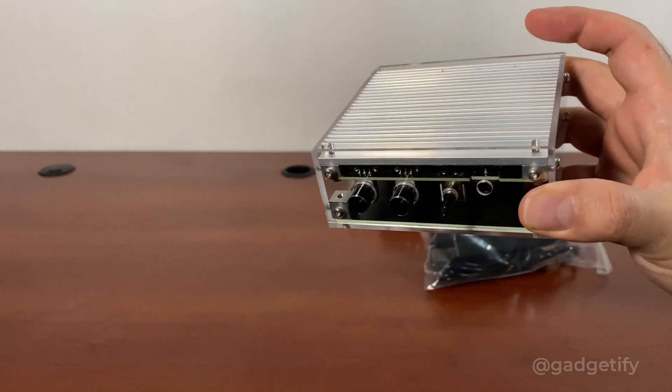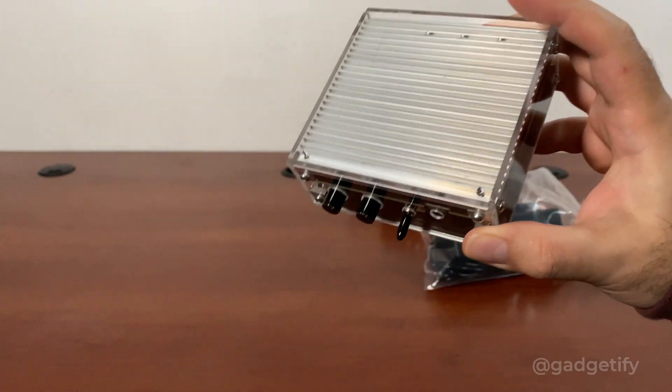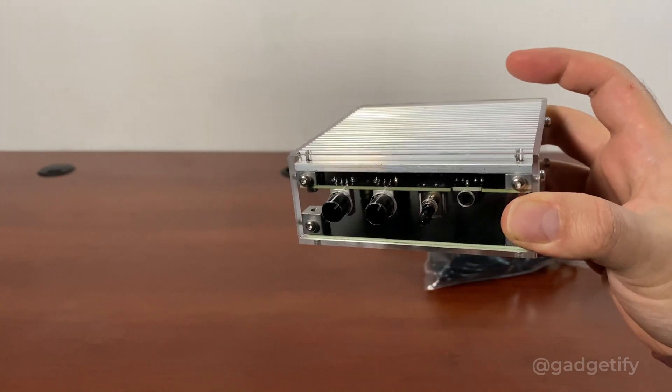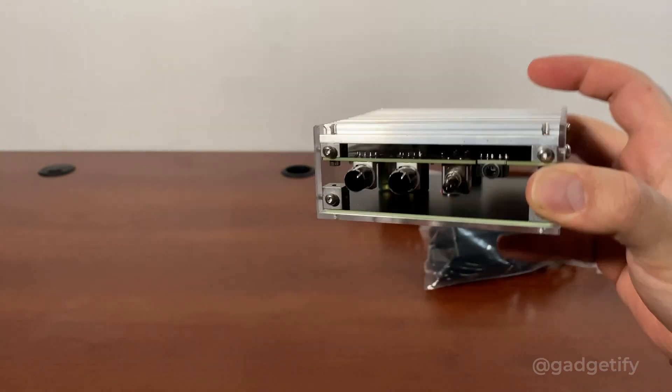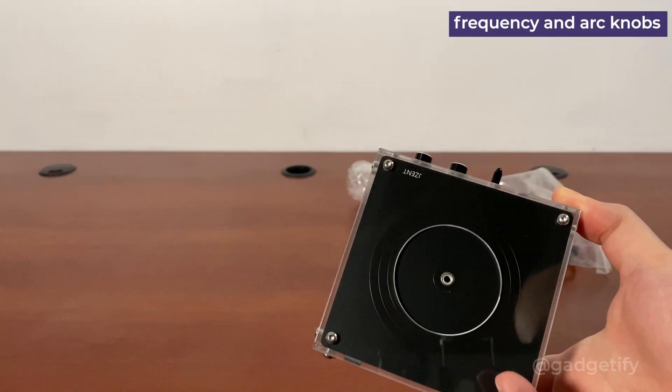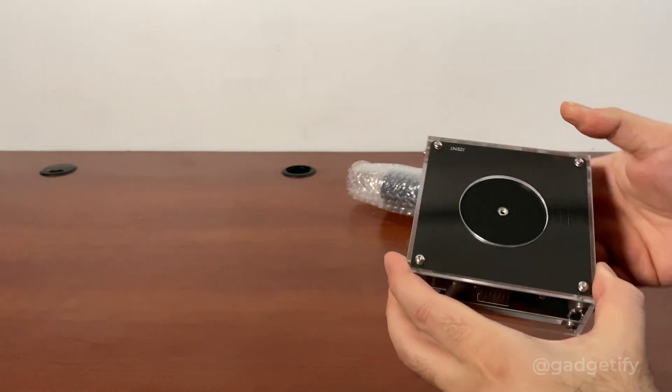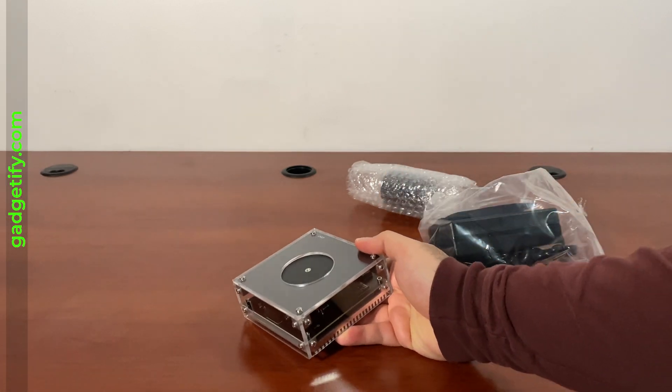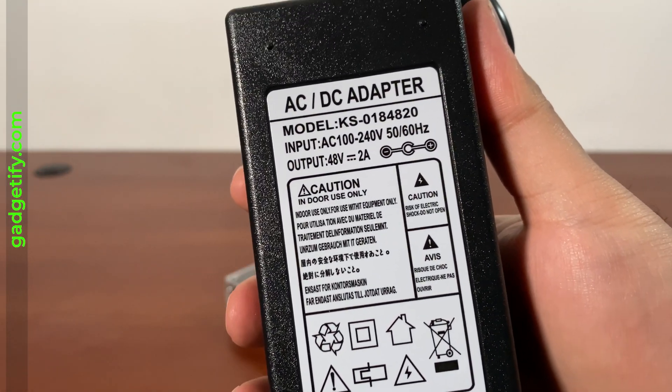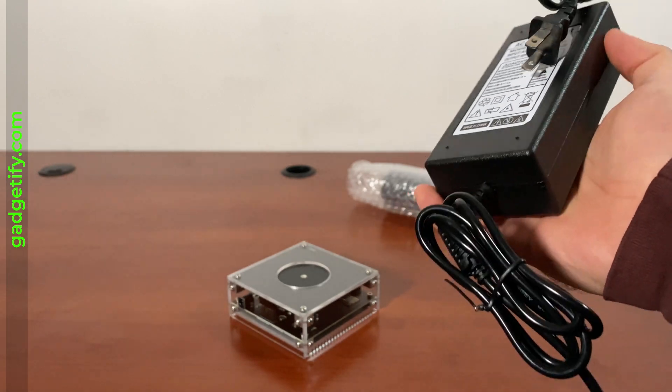So just like all other similar desktop Tesla coils, this has knobs for adjusting frequency and power. The design also is pretty similar, so you have to install it here and reset. You are going to need a 48 volt adapter for this.